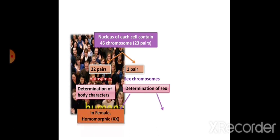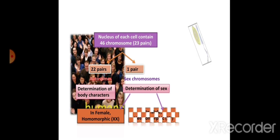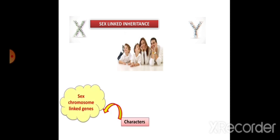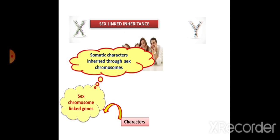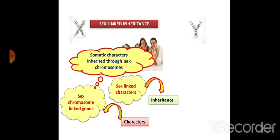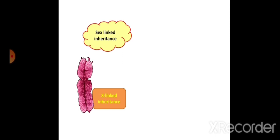In human sex determination, XX is female and XY is male. In sex-linked inheritance, the genes controlling somatic characters get transferred onto the sex chromosome. These somatic characters are then inherited through the sex chromosome and are called sex-linked characters, and the inheritance is called sex-linked inheritance.